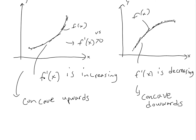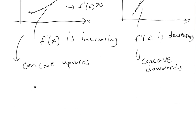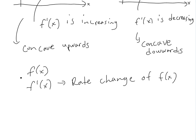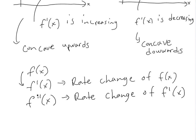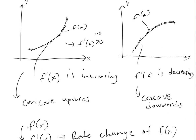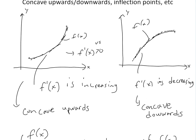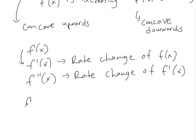Now let's look at what this actually means in terms of the second derivative. We have f of x, and then f prime of x, which is just the rate of change of this function. So f double prime of x is just the rate of change of f prime of x. The first derivative is the rate that f of x is changing, and the second derivative is the rate of change of f prime of x. This one is increasing, and so f double prime of x is greater than zero — this means it's concave upwards.